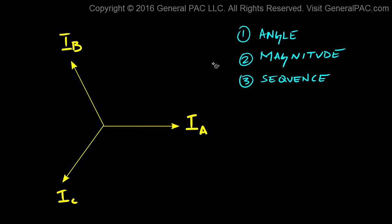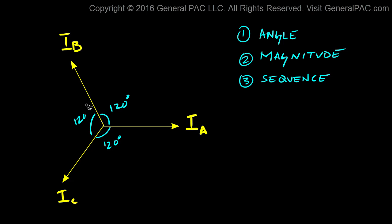With respect to the angle, we would have to have equal displacement between all three phasors. What that means is that the angle between IA and IB has to be 120 degrees. The angle between IA and IC also has to be 120 degrees. And the angle between IB and IC also has to be 120 degrees. If the angle displacement between all three phasors is 120 degrees, we have completed rule number one.